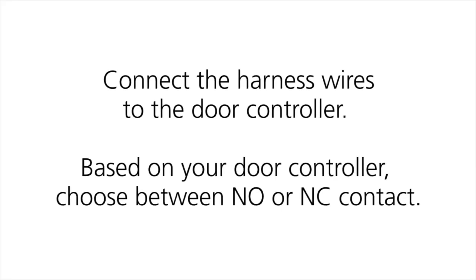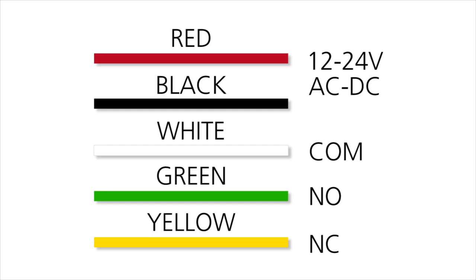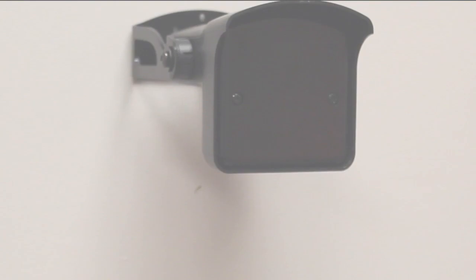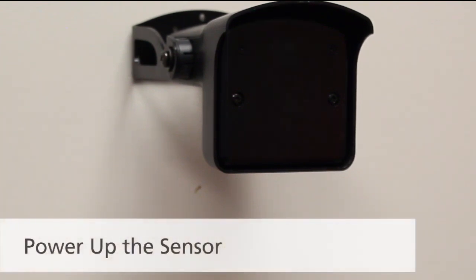Connect the harness wires to the door controller. Based on your door controller, choose between normally open or normally closed contact. Power up the sensor.